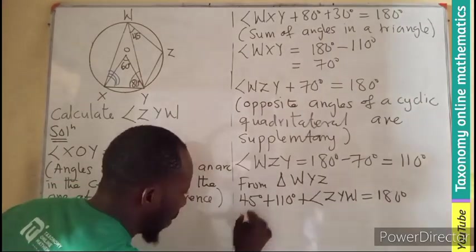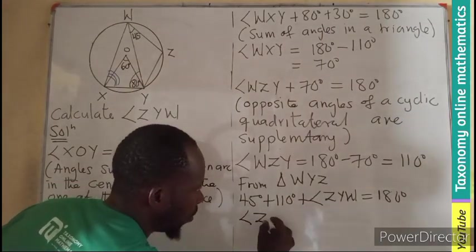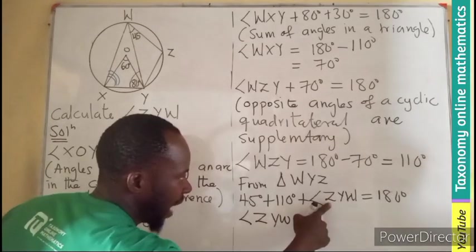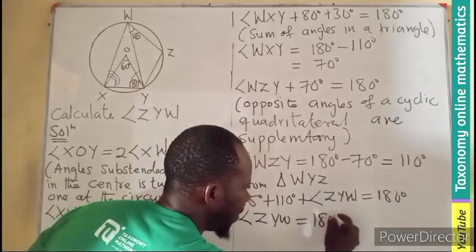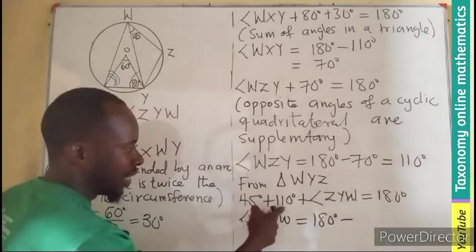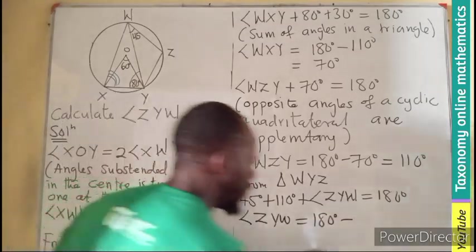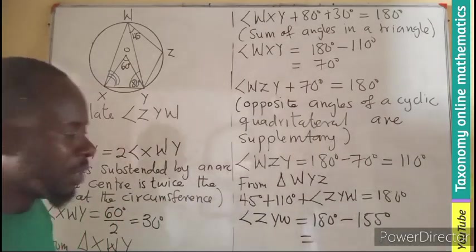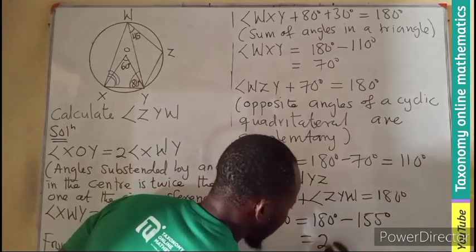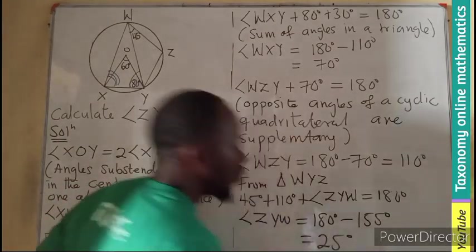So let's maintain our angle ZYW equals to 180 minus the sum of this will be 155. So let's see what that would be, and that would give us 25 degree.